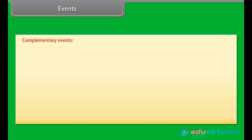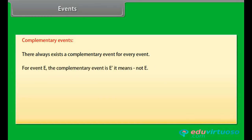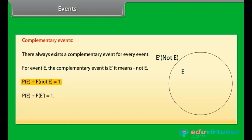Complementary events: There always exists a complementary event for every event. For event E, the complementary event is E dash — it means 'not E'. Probability of event E plus probability of event not E equals 1. Therefore, probability of event not E is equal to 1 minus probability of event E.